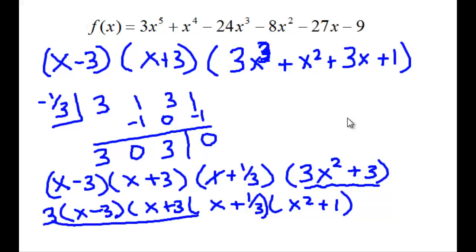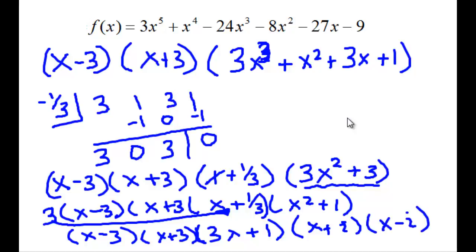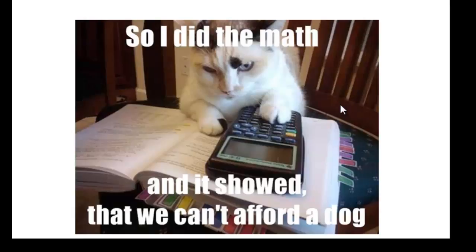So we have x minus 3, x plus 3, and we can also use this 3 here to take care of the 1/3. So we have x minus 3, x plus 3, 3x plus 1, and then the x squared plus 1 can be factored into x plus i, and x minus i. And now we've factored that entire function. And now I leave you just for fun. See you in class.